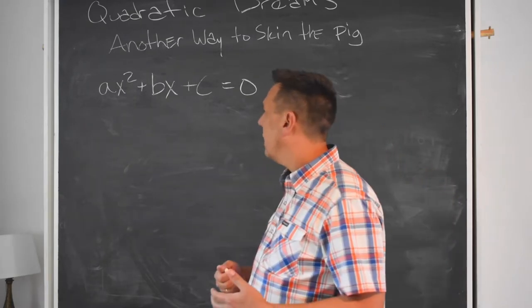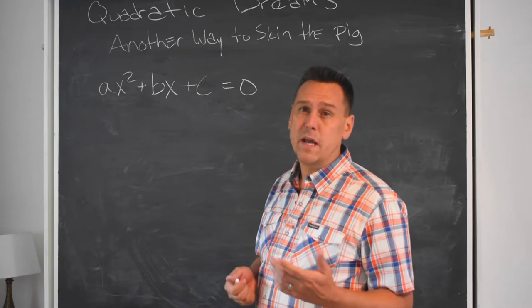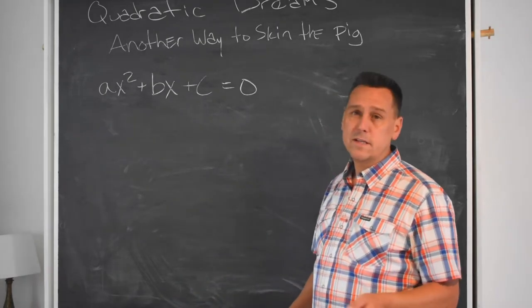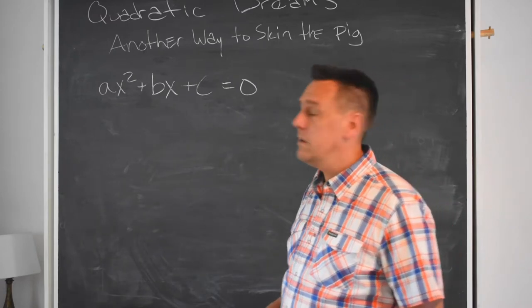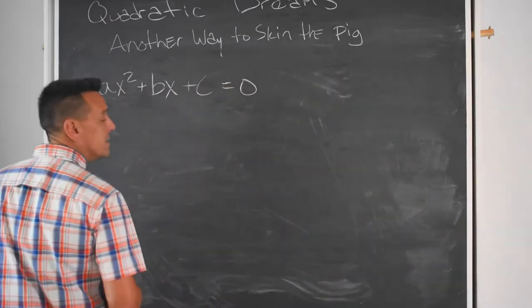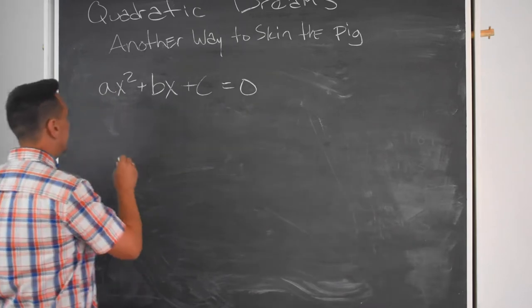So I believe that we can divide through by a, you believe that we can divide through by a, so let's stop kidding around and just pretend that that first coefficient is always going to be one, because it's such an easy thing to do, to get rid of it.